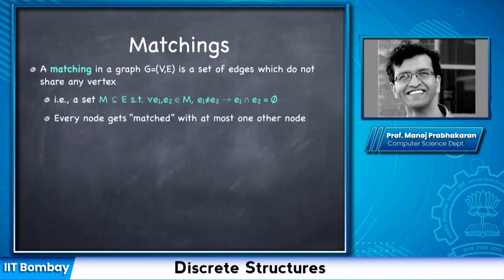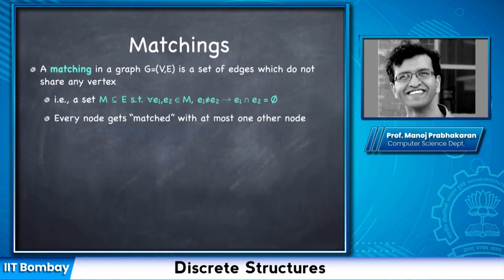So why is it called a matching? If you have a vertex that has an edge incident on it, that's the only edge that can be incident on it, and that edge matches this vertex with the other endpoint. So you could think of a matching as picking pairs of nodes, but you need not match every vertex — there could be some vertices left unmatched. Every vertex is either matched with a unique partner or left unmatched.